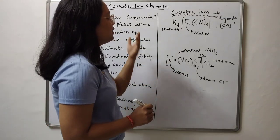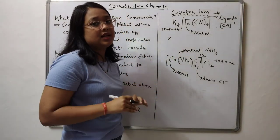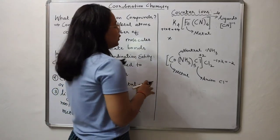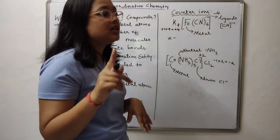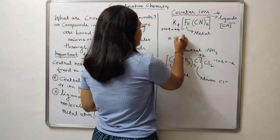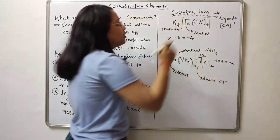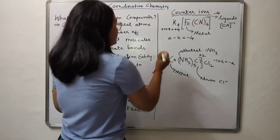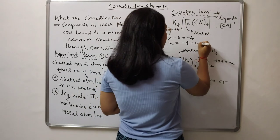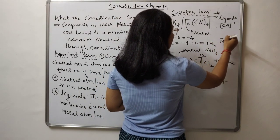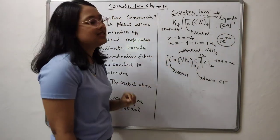Now let's calculate the oxidation state of iron in the first example. Let x be the oxidation state of iron. Cyanide carries a charge of minus 1, and 6 are present, giving minus 6. This should equal the overall charge on the coordination entity, which is minus 4. So x minus 6 equals minus 4, meaning x equals plus 2. Iron in this case carries a charge of plus 2.